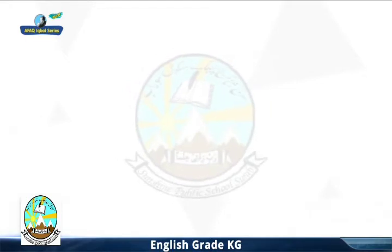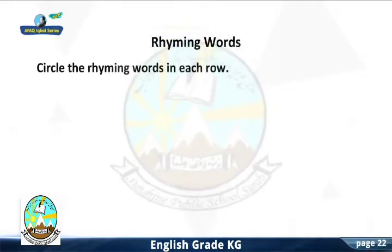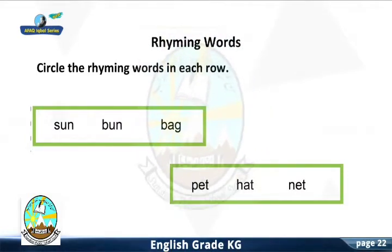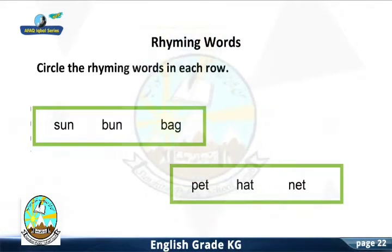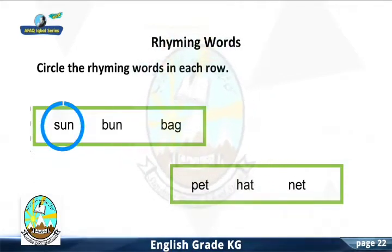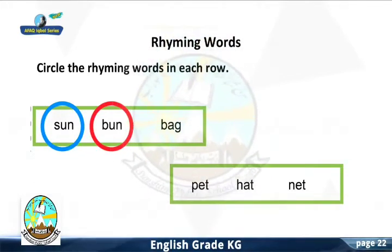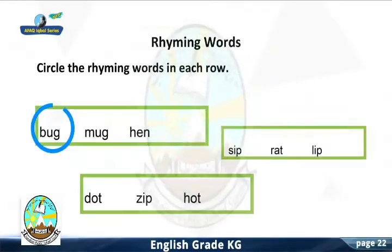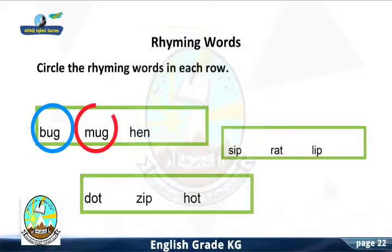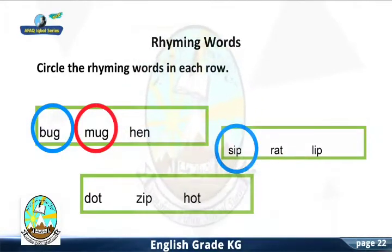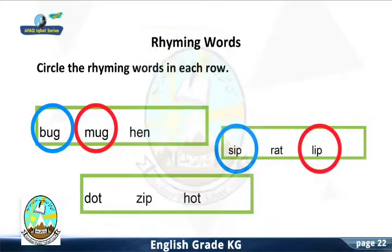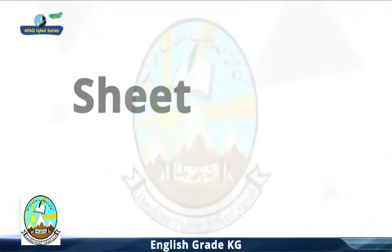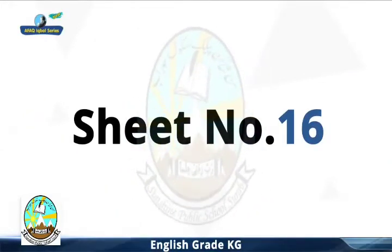Sheet Number 15 Topic: Rhyming Words. Circle the rhyming words in each row. Sun — Bun. Pet — Net. Bug — Mug. Sip — Lip. Dot — Hot. Very good.